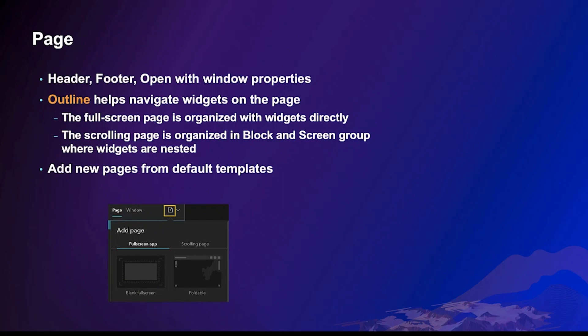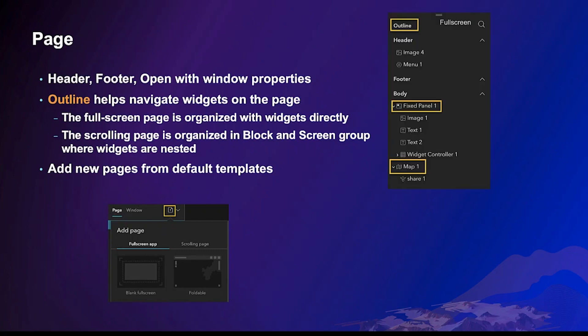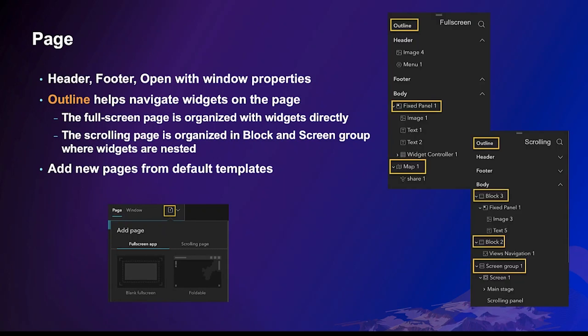The page is the backbone of Experience Builder — you can turn on the header and footer of the page. The outline becomes handy when widgets are nested on the page; it helps you navigate the widgets and select the right one to modify.